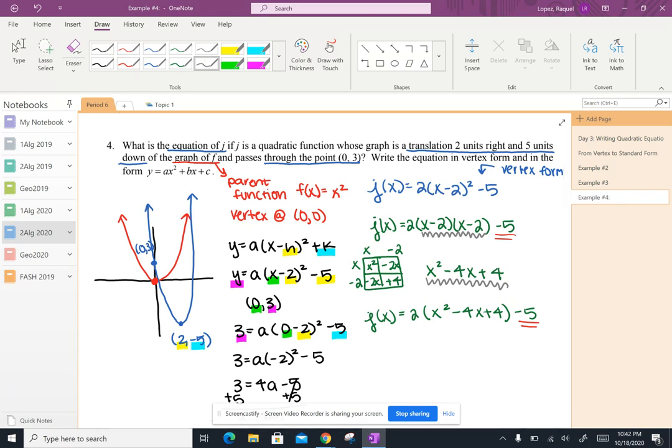So from here, we're going to distribute the two to everything inside the parentheses. So now after doing that, we get two x squared minus two times negative four is negative eight x. And then two times positive four is positive eight. And don't forget that minus five at the end here.